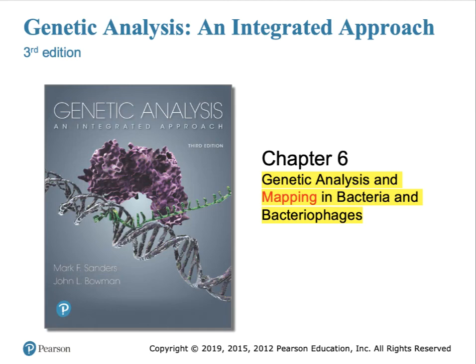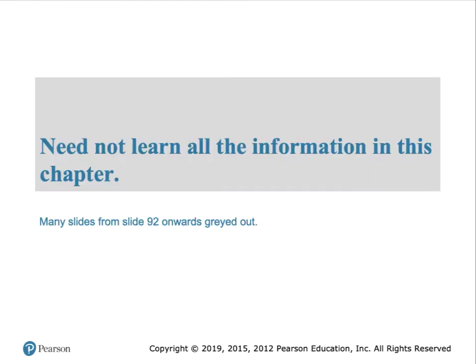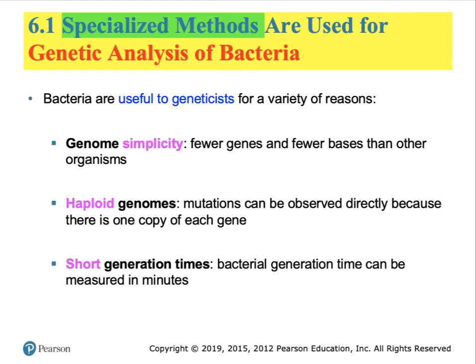This is Video Lecture Chapter 6 on Genetic Analysis and Mapping in Bacteria and Bacteriophages. The chapter discusses the different mechanisms available to scientists to map the position of genes along chromosomes of bacteria and also of bacteriophages, viruses which infect bacteria. Some of the latter slides are not included in the examination for this course. The chapter is divided into six sections and many of these slides are very simple and just refer to diagrams.